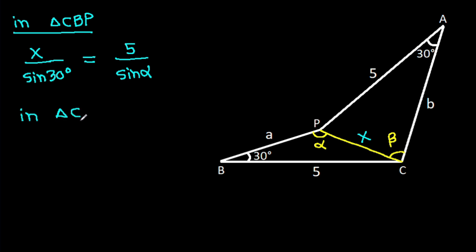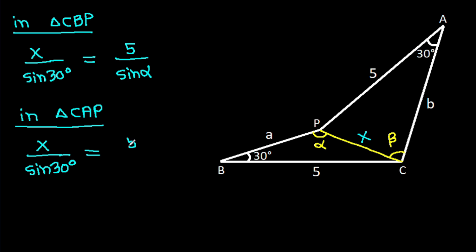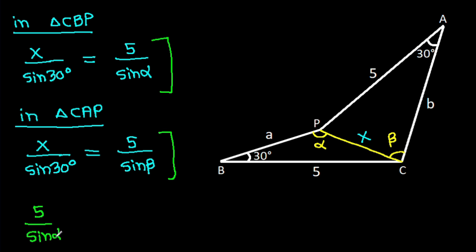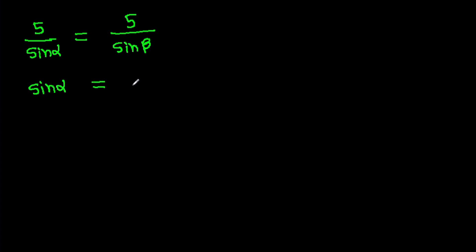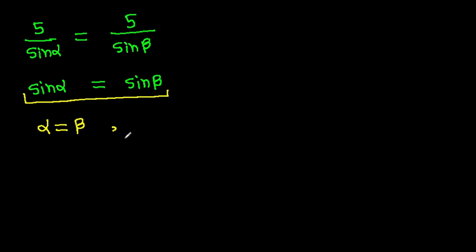And in triangle CAP, X over sin 30 degrees equals 5 over sin beta. So from these two equations, we can say that 5 over sin alpha equals 5 over sin beta. That means sin alpha equals sin beta.